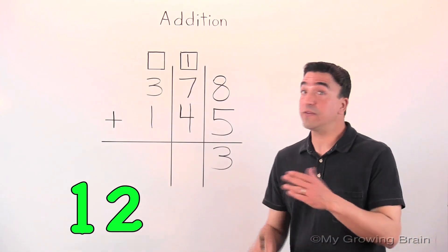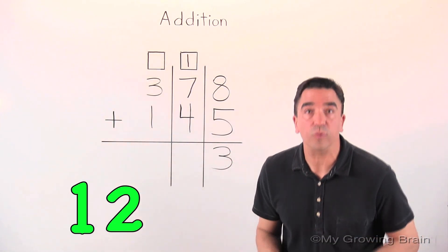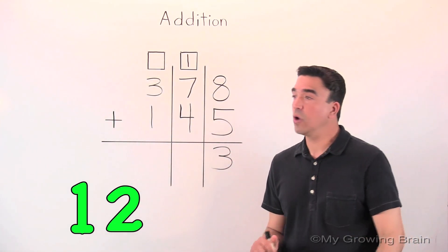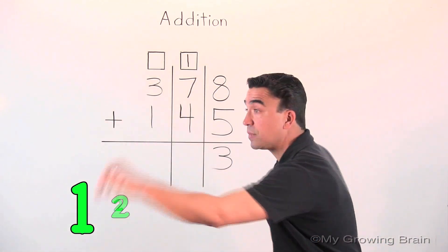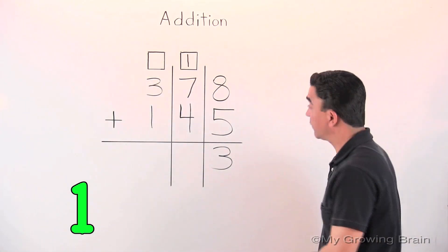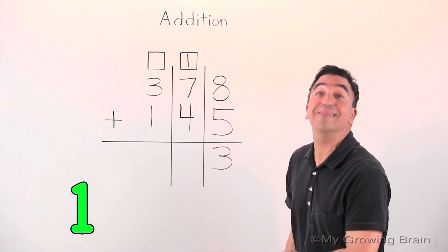Once again, it's a two-digit number, so we're going to need to regroup. First, we're going to take the two from this place and put it into our tens place.